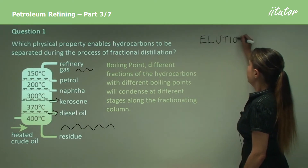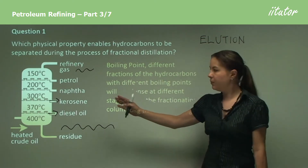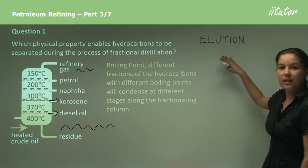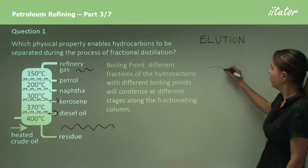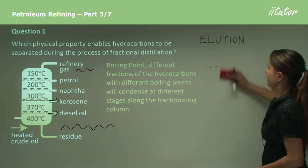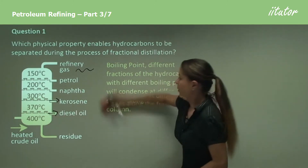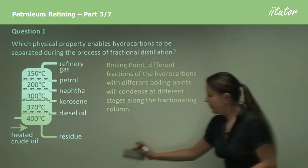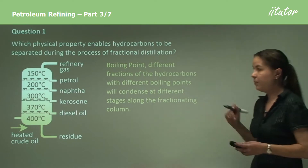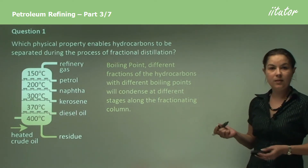Elution basically means when we use the physical property of boiling point — when something comes off at a different level, we say that it elutes or comes off. A bit like water out of a tap. So remembering this question will help us for the next question. Remember: boiling point, and the different fractions will condense at different stages.